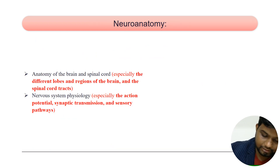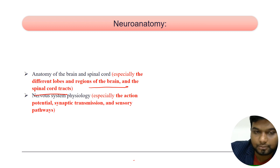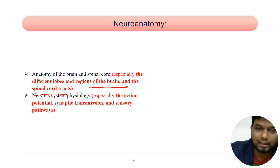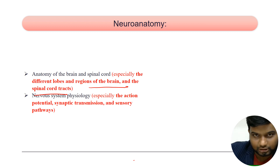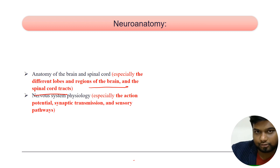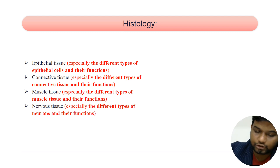For neuroanatomy, focus on the different regions of the brain and spinal cord tracts — the dorsal column, spinothalamic tract, rubrospinal tract, and vestibulospinal tract, covering both sensory and motor tracts. Remember the thalamus: the lateral geniculate body, medial geniculate body, ventroposterolateral nucleus, and all thalamic nuclei; the hypothalamus, epithalamus, and cortex — what each lobe contains and the functions of each cortical area including higher order functions. Combine neuroanatomy with nervous system physiology: action potentials, nerve-to-nerve transmission, nerve-to-muscle transmission, and related pathways.